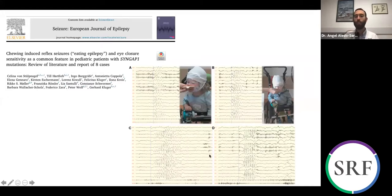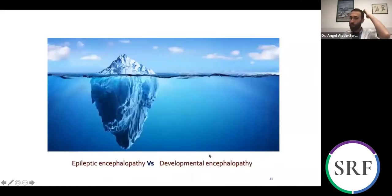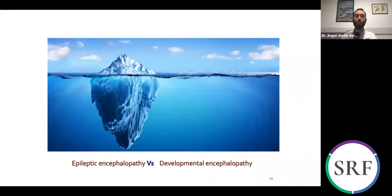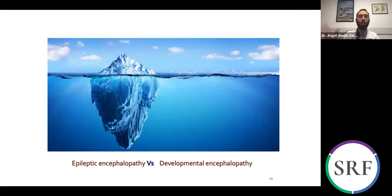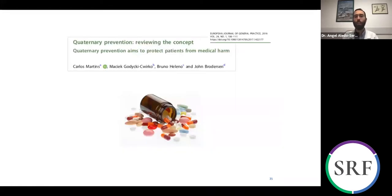This is important. We were very much into the concept of epileptic encephalopathy — that seizures and discharges could produce developmental delay and cognitive problems. But now we know that sometimes the cause is not epilepsy itself; we have a genetic mutation like Syngap 1, and the mutation has different symptoms. One of them could be epilepsy, and others could be developmental delay, motor dysfunction, and cognitive problems. The epilepsy is not the main character producing the developmental delay — it's more the genetic cause in the background.